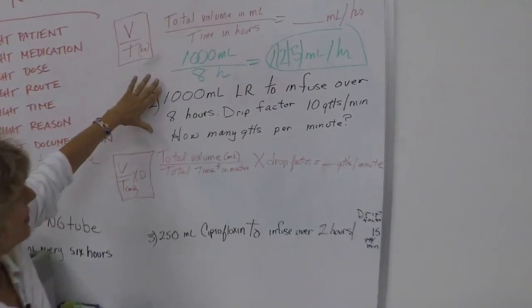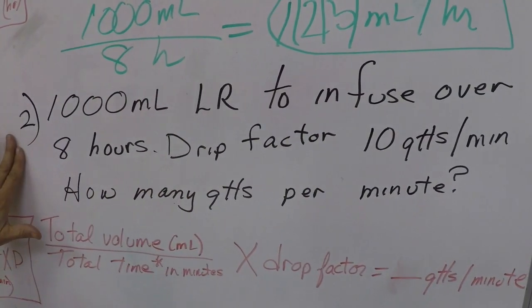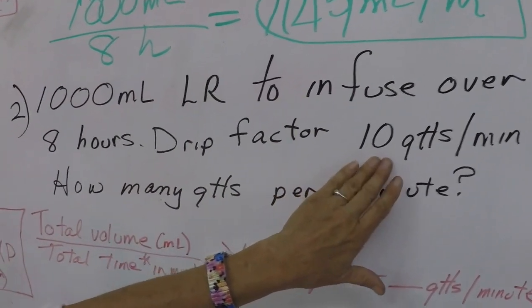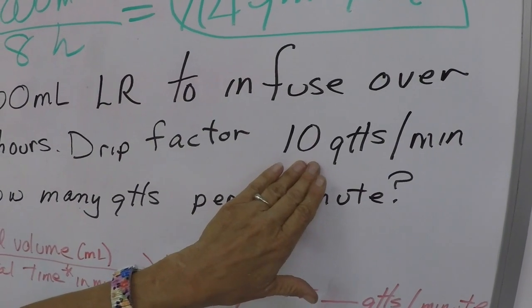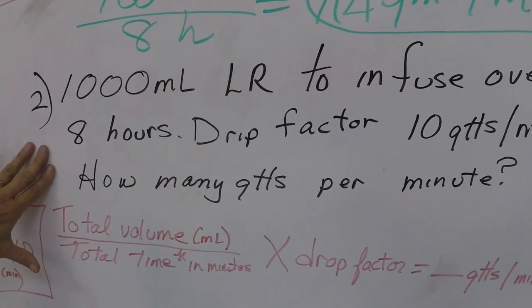So here we have a thousand ml bag to infuse over eight hours. Our drip factor tubing, it says 10 on it, 10 drops per ml. Okay, so how many drops per minute do we want to have?